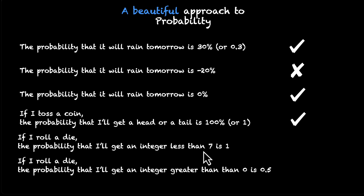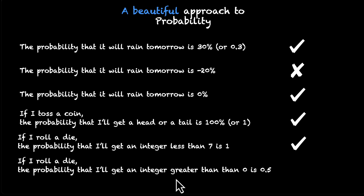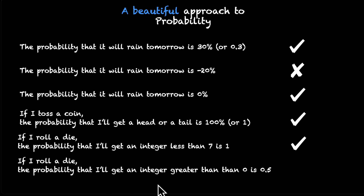Next: if I roll a die, the probability that I'll get an integer less than 7 is 1. When you roll a die, you get 1, 2, 3, 4, 5, or 6. All of these integers are less than 7, so no matter what you get, that integer will be less than 7 — that's 100% guaranteed, so the probability is 1. That makes sense. But the last statement says: if I roll a die, the probability that I'll get an integer greater than 0 is 0.5 or 50%. That's not right. You will get 1, 2, 3, 4, 5, or 6 — all of them are definitely greater than 0. So the probability is 1, not 0.5. This statement does not make sense.